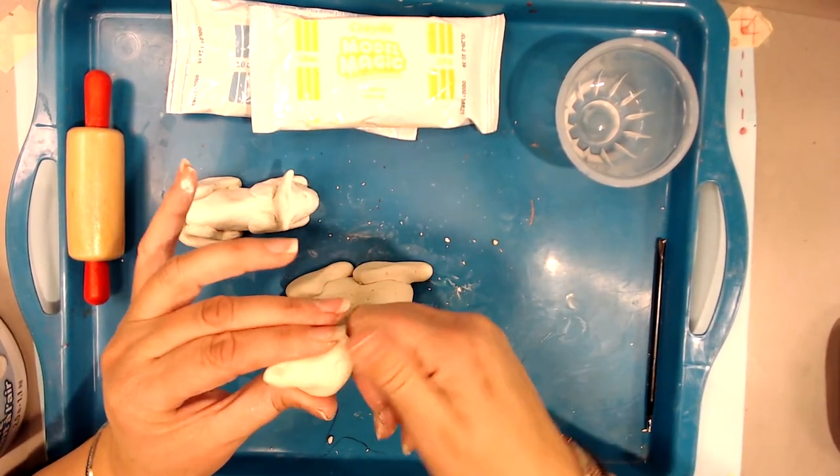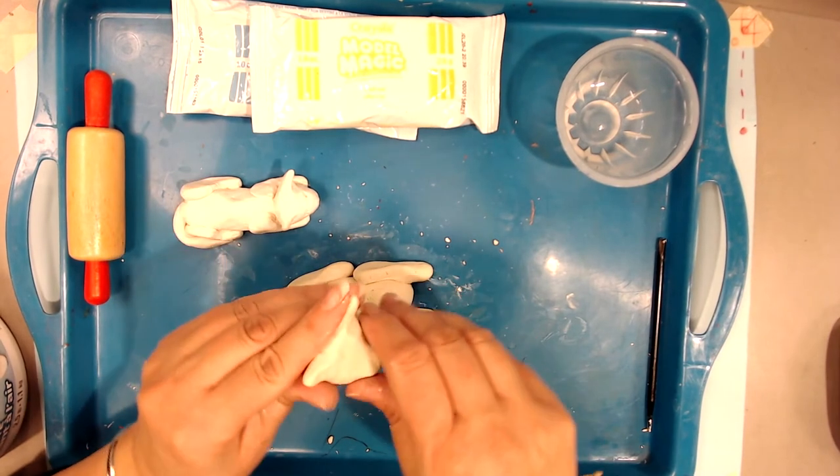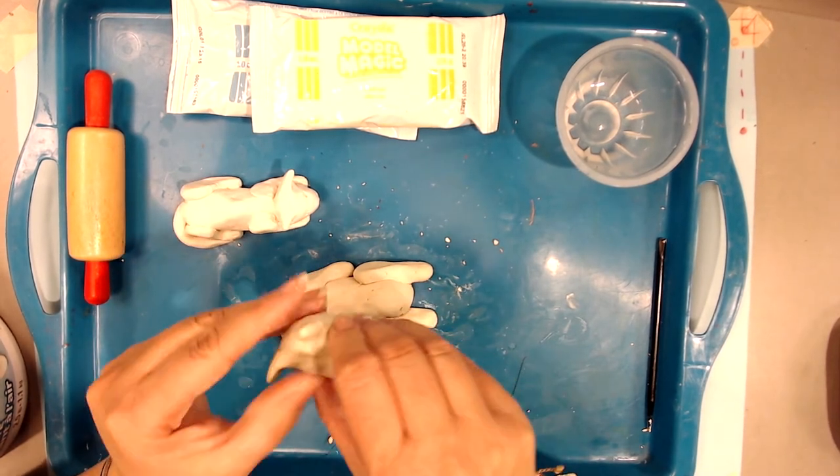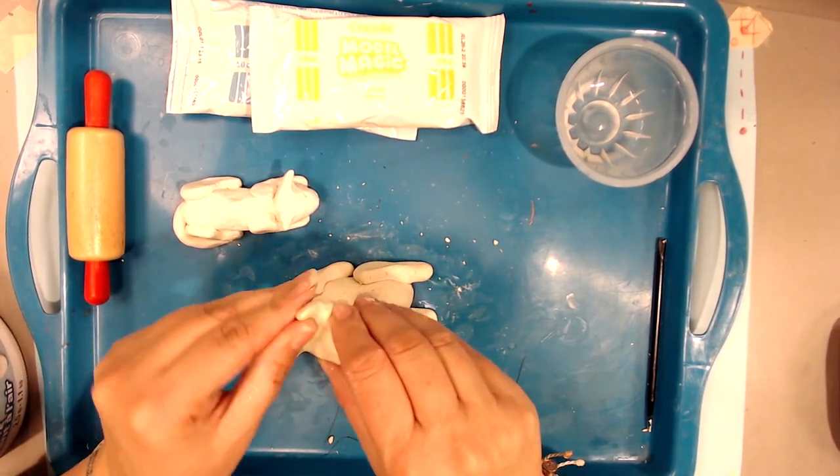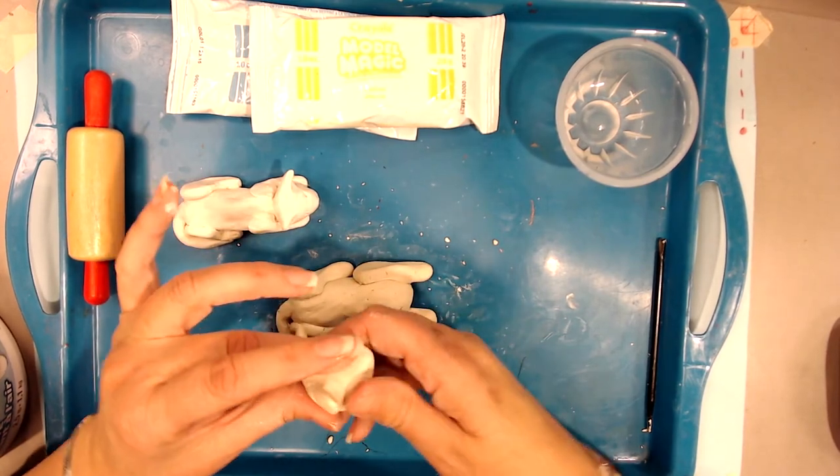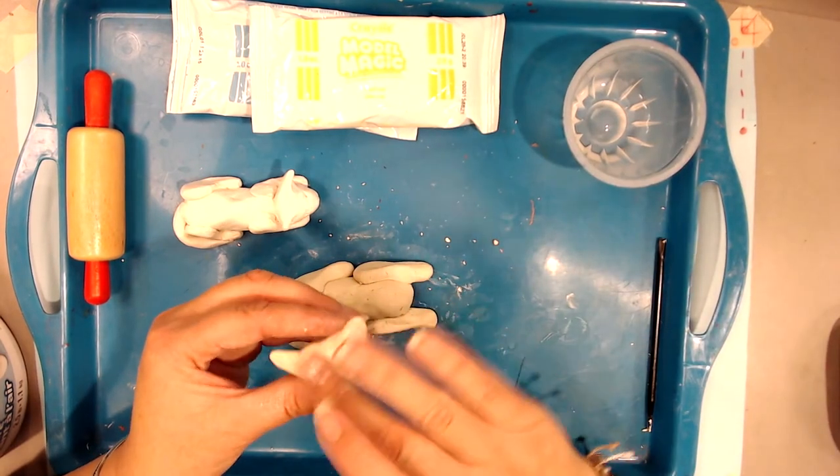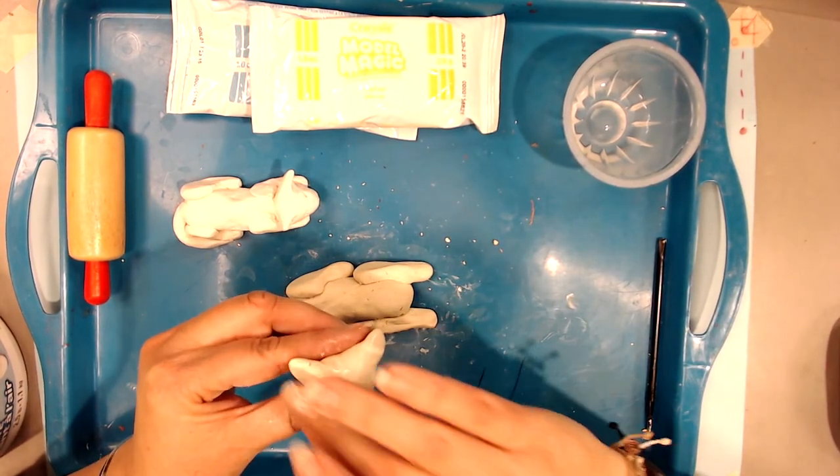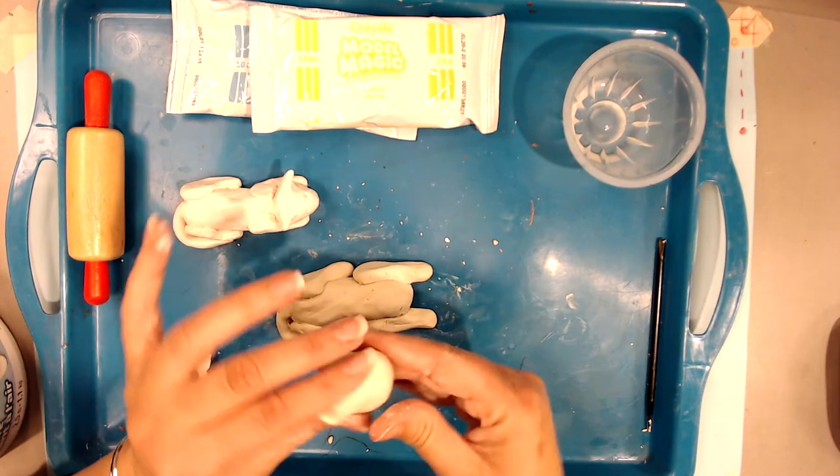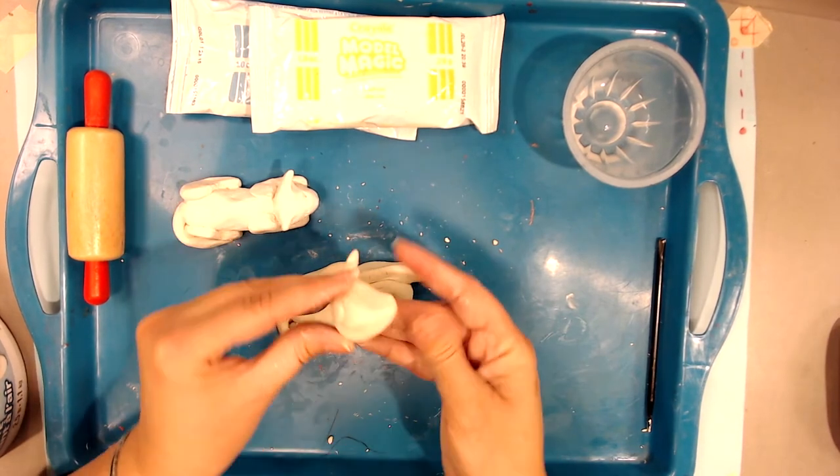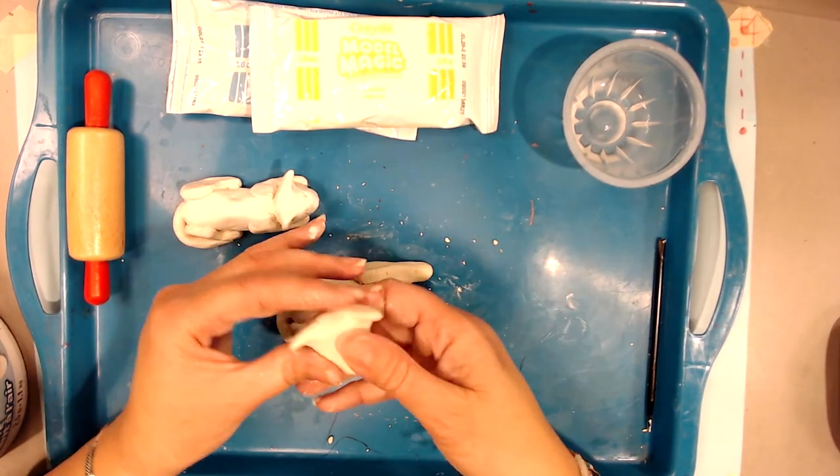Once you're happy with the shape of your cat's head, I'm going to make his ears kind of curve forward a little like he's paying attention. He sees or hears something interesting. So that looks like a good cat head.